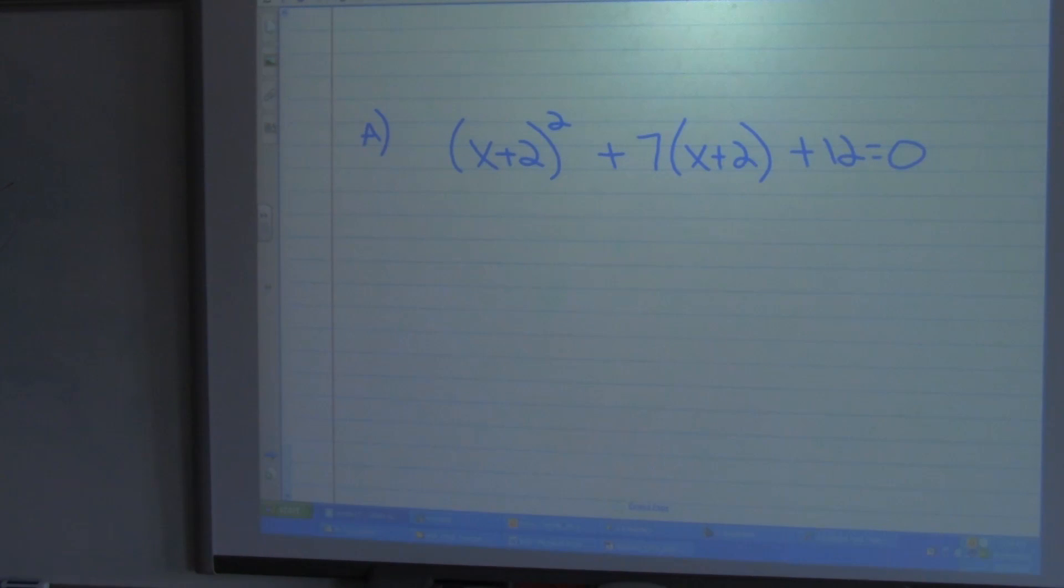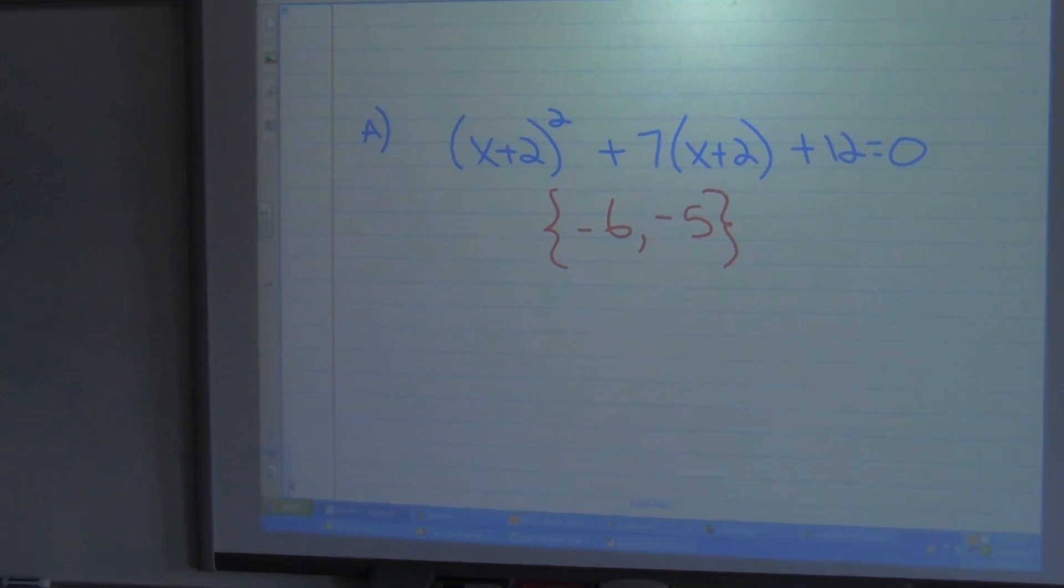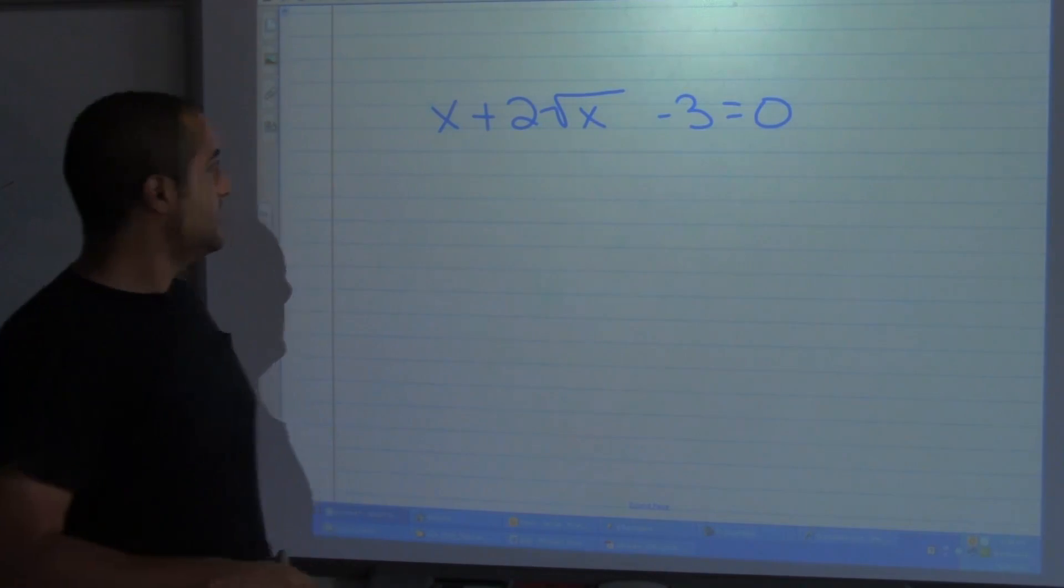So that would mean that negative 14 and negative 1 are part of your solution. Alright, go ahead and pause the video, try this problem out. I'm going to show you the answers in 3, 2, 1. Alright, here's your solution set. I hope you got it right.